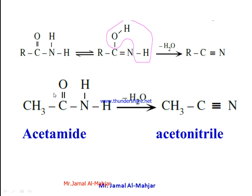For example, acetamide: CH₃-C(=O)-NH₂. Just remove H₂O using P₂O₅ and you get CH₃-C≡N, which we call acetonitrile.